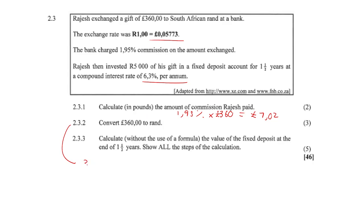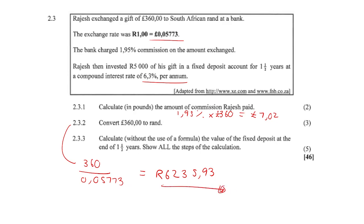Question 2.3.2: Convert 360 pounds to Rands. It's simply 360 pounds divided by 0.05. Don't round off — we only round off at the end. That gives us 6235.93 Rands, which is the answer for 2.3.2.